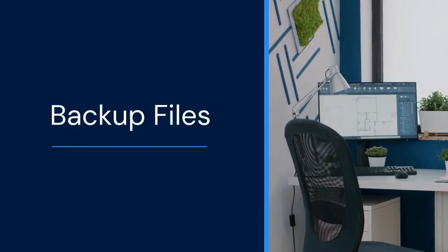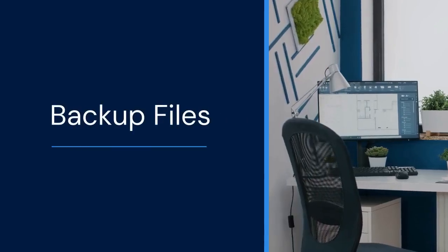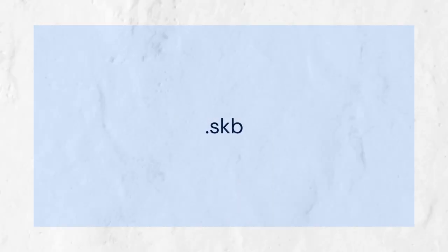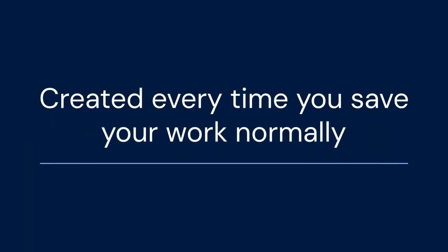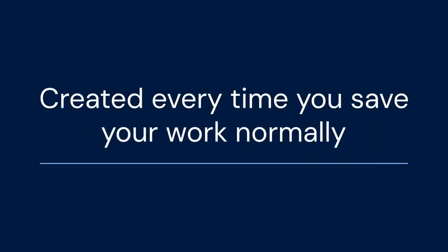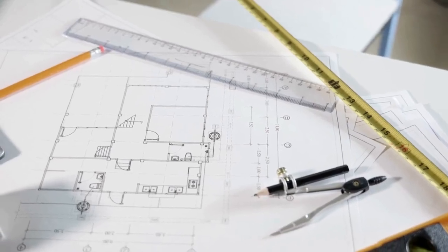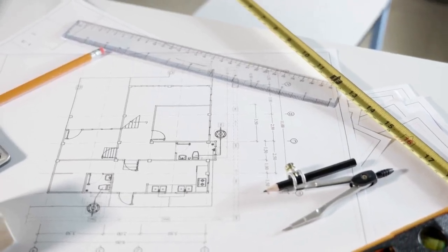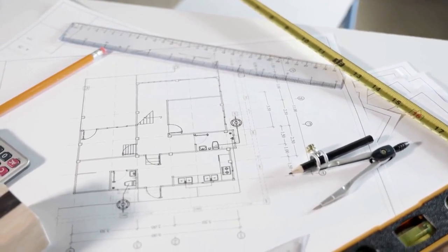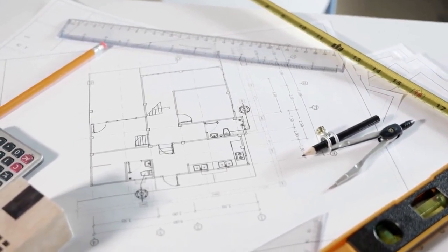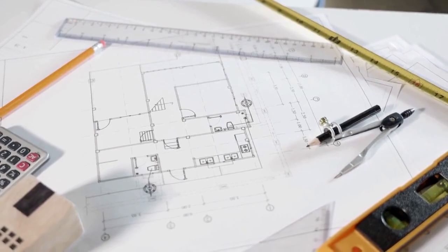Now, let's talk about backup files. SketchUp also creates backup files with a .skb extension. They are created every time you save your work normally. The .skb file is essentially the previous version of your saved file. If your main SketchUp file gets corrupted, the backup file is there to help.